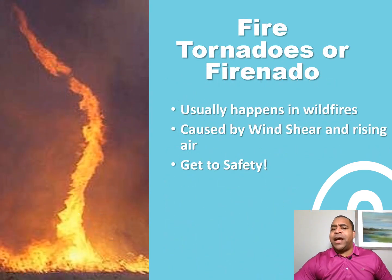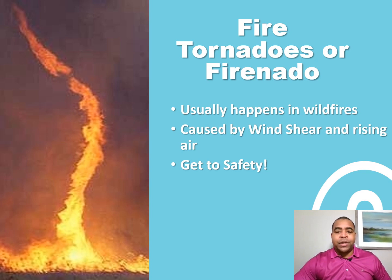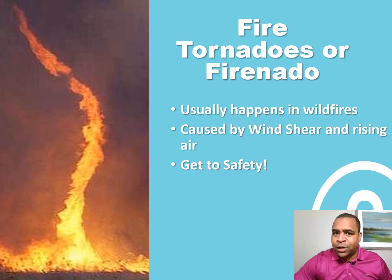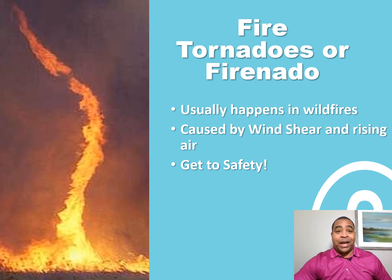The other thing that some of you have actually seen in movies is something called a fire tornado, or a fire nado. This actually does happen in real life — it usually happens around wildfires and is caused by wind shear and a lot of rising air. Remember, wind shear is a change in direction of wind as well as a change in how quickly that wind is moving. If ever you see a fire nado, do not even try to put it out — just run in the opposite direction and wait until the wind dies.